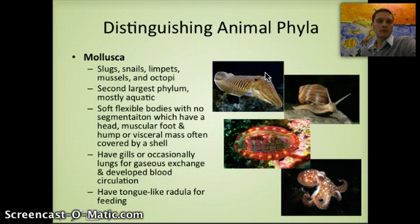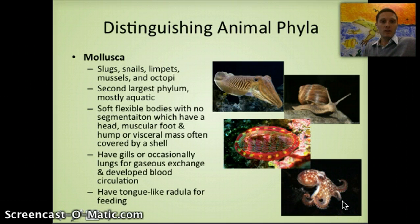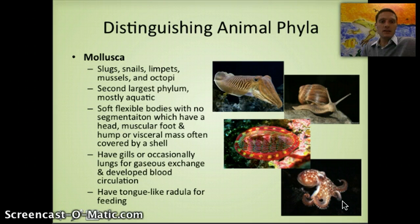The next phylum is Mollusca, which includes slugs, snails, mussels, and octopus. They have soft flexible bodies with no segmentation, a head or muscular foot, and often a visceral mass covered by a hard shell — though octopus lack the hard outer shell. Some, like the octopus, have well-developed sensory neurons and are extremely intelligent. They have gills and sometimes lungs for gas exchange, and a tongue-like radula for feeding.